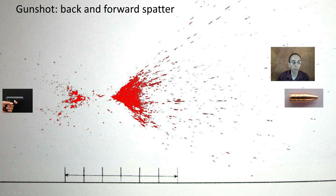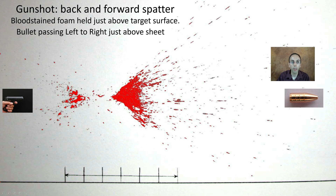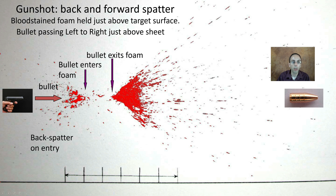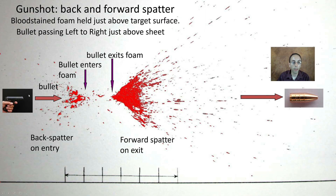For gunshot back and forward spatter: the gun is fired, and blood-stained foam is held just above the target surface. The bullet passes from left to right just above the sheet — it enters the foam, exits the foam, producing back spatter at the entry and forward spatter at the exit. This illustrates the differences between initial contact with an object and how it exits, which is important when determining which direction a gun was fired or where it impacted a surface.